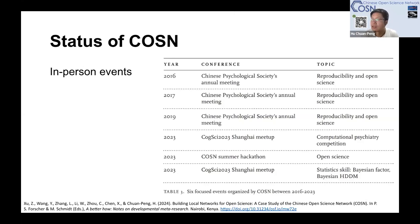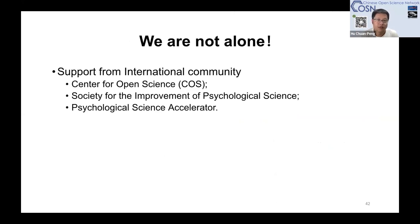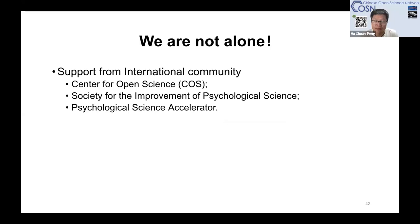As a grassroots network promoting open science, we are not alone. We get a lot of support from the international community. I became an ambassador of the Center for Open Science in 2016, and I am currently a member of the Executive Committee of the Society for the Improvement of Psychological Science. I also participated in the Psychological Science Accelerator. In China, the Chinese government has been part of UNESCO's open science recommendation. The government is trying to support and promote open science — several infrastructure pieces have been built, including the preprint platform ChinaXiv, a repository for storing scientific data called Science Data Bank, and an open science platform built by the Institute of Psychology at the Chinese Academy of Science.